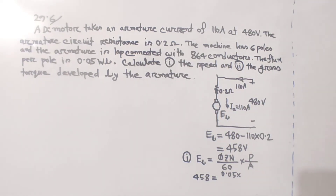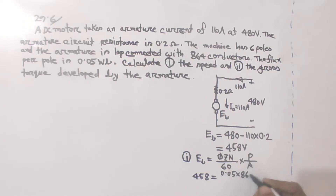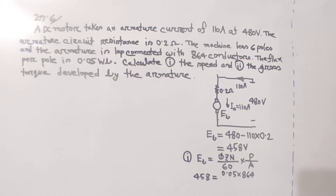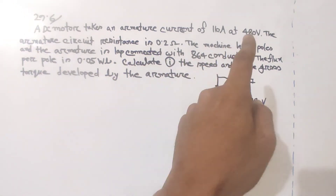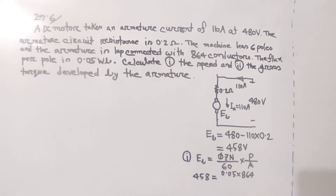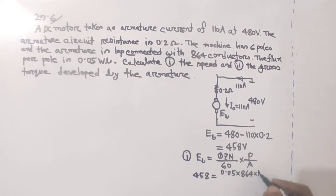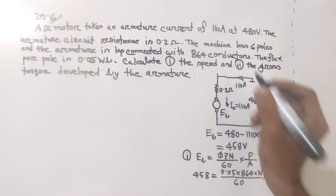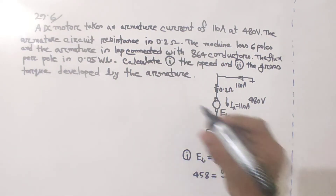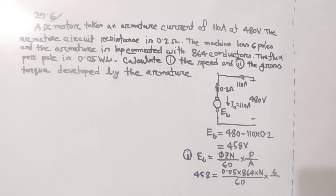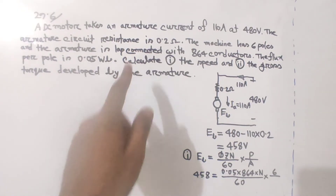The number of conductors Z is 864. The flux per pole is 0.05. For a lap connected machine, the number of parallel paths A is always equal to the number of poles P, so A equals 6. We substitute these values into the speed formula.